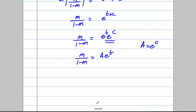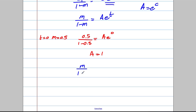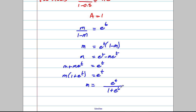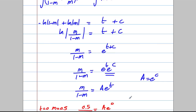When t = 0, m = 0.5. Substituting: 0.5/(1−0.5) = Ae^0 = A. That's (1/2)/(1/2) = 1, so a = 1. We therefore have m/(1−m) = e^t. Making m the subject: multiply up by (1−m), giving m = e^t(1−m) = e^t − me^t. Adding me^t to both sides: m + me^t = e^t. Factorising: m(1 + e^t) = e^t. Therefore m = e^t/(1 + e^t). That completes part a.